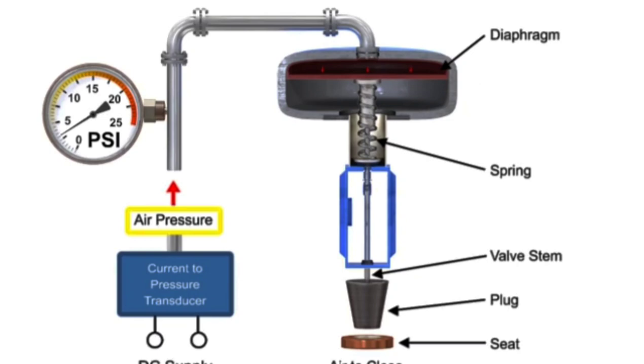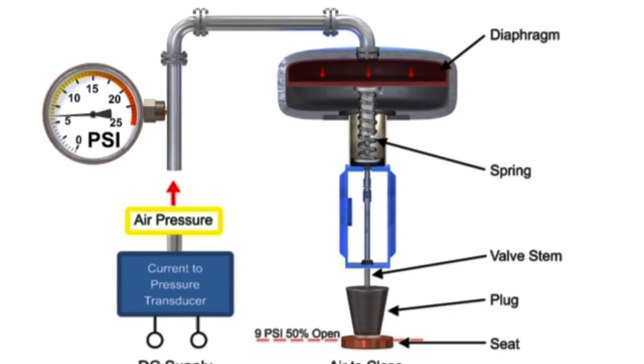For example, a pressure of 9 PSI applied to the diaphragm moves the spring and valve stem to 50% of operating range.